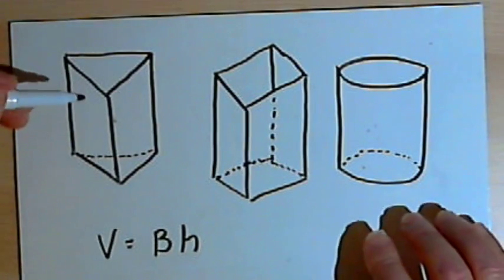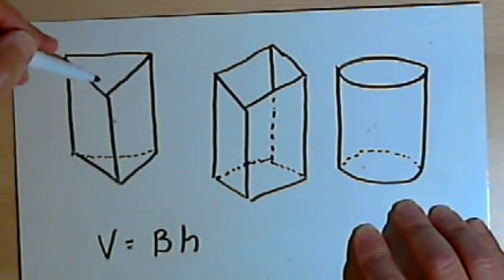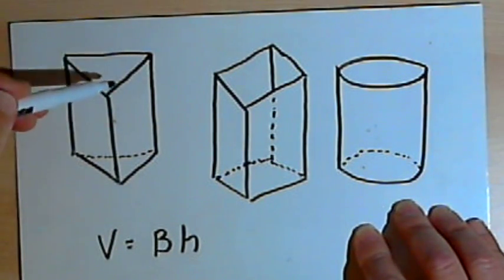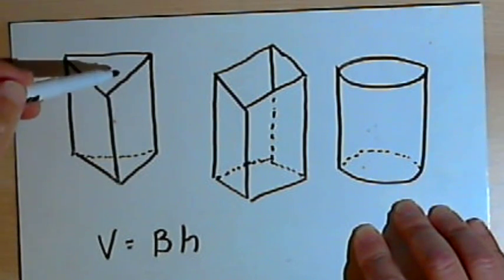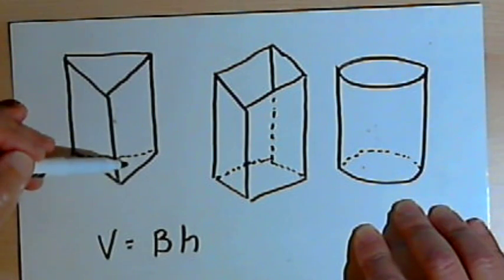So I've drawn a couple of prisms here. The first one is a triangular prism. It's got a triangle as both of the bases. Those triangles are parallel to each other and they're congruent with each other.